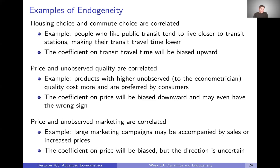In many IO applications, we run into the case where price and unobserved quality of a product — unobserved to the econometrician — are correlated. Products with higher unobserved quality tend to cost more but are also preferred by consumers. If that's correlated with price, we can end up with the coefficient on price being biased downward in absolute value — possibly even having the wrong sign. Demand curves are downward sloping, so prices should have a negative effect on consumption, but if price is correlated with unobserved quality, people may appear to prefer higher-priced products, giving us potentially the completely wrong sign.